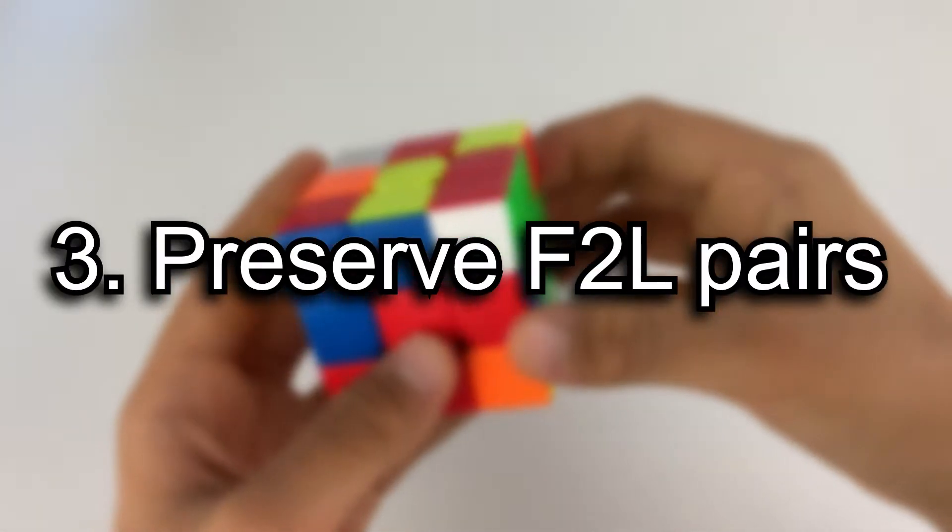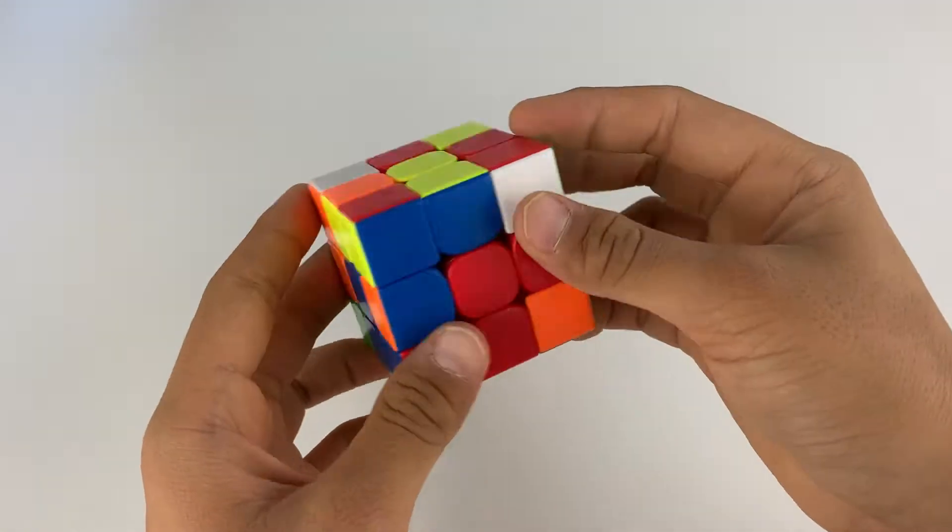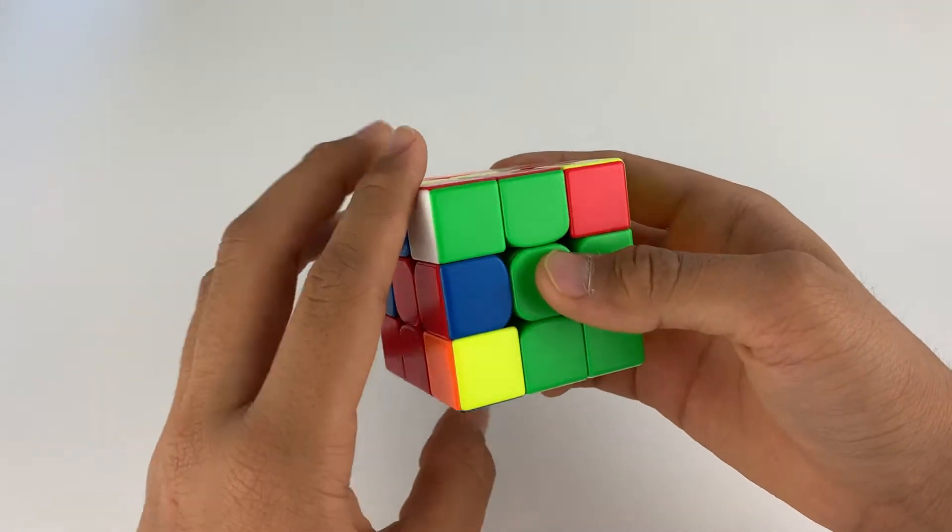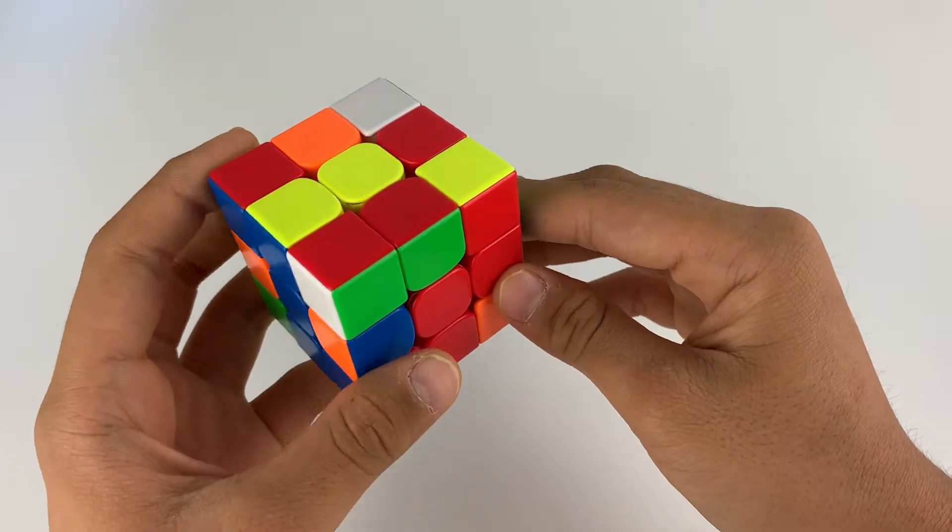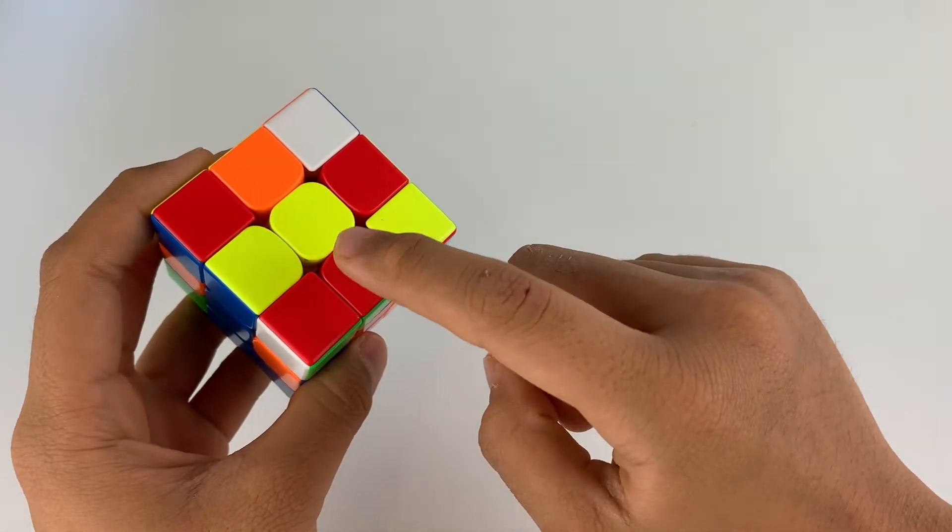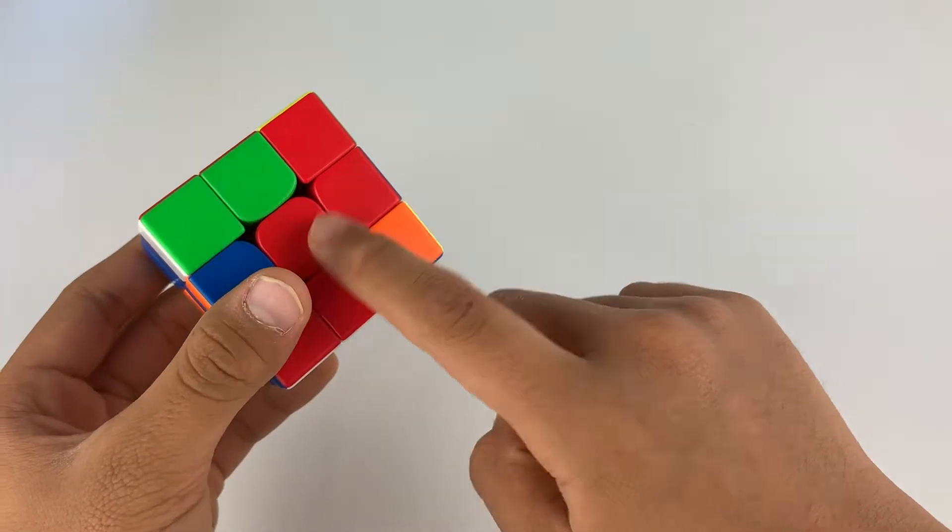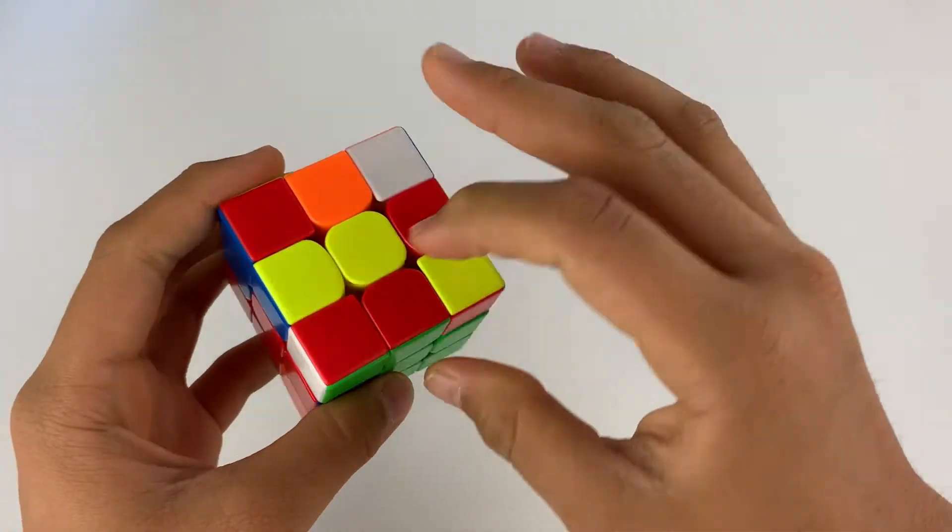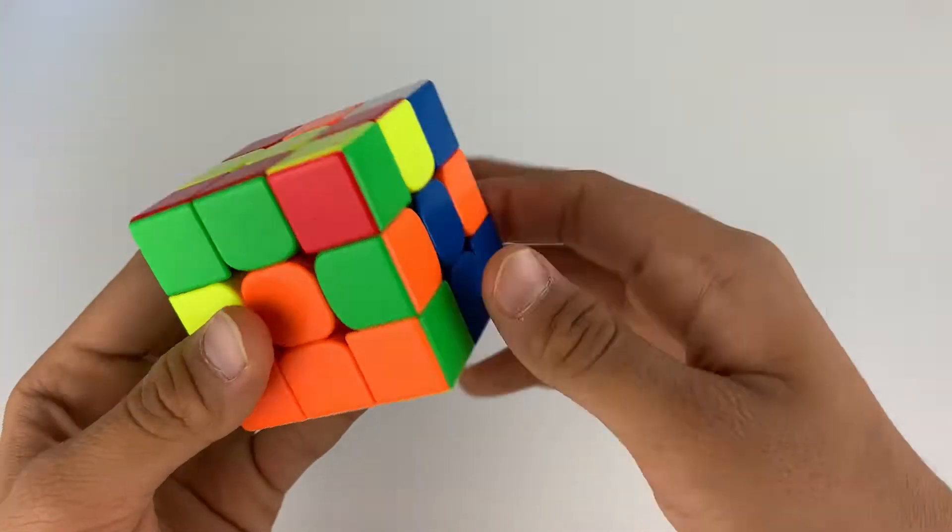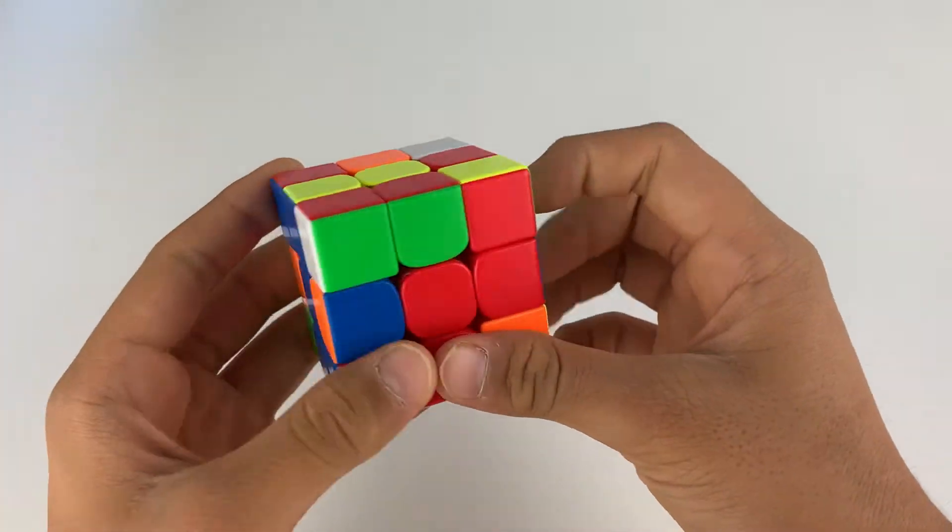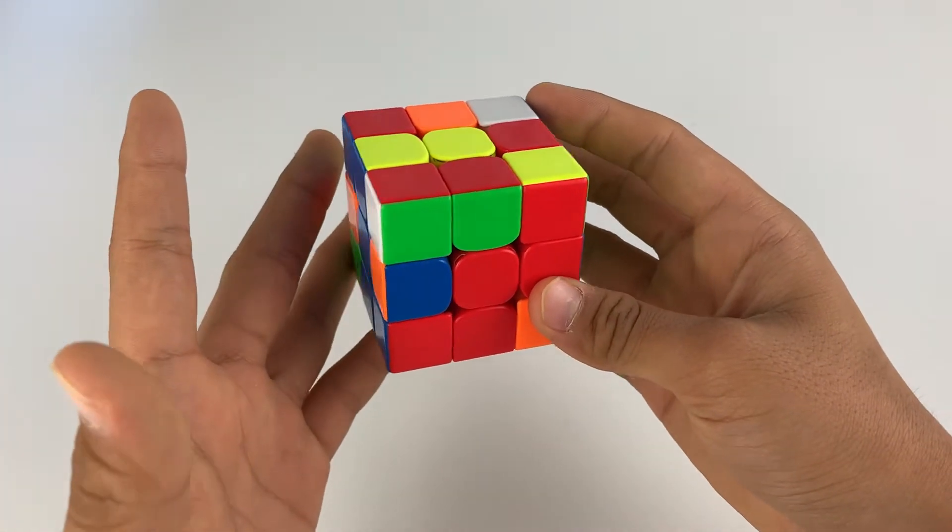Number three, preserving pairs. Sometimes while doing the first layer, you'll run into a case like this and if you try to insert it normally, it doesn't preserve the pair. So the way to preserve the pair is if you look on the top, that color should match this front color. If you have it like this, it's wrong because red and green don't match, red and orange don't match, red and blue don't match. But if you have it like this, you have it in the right orientation.